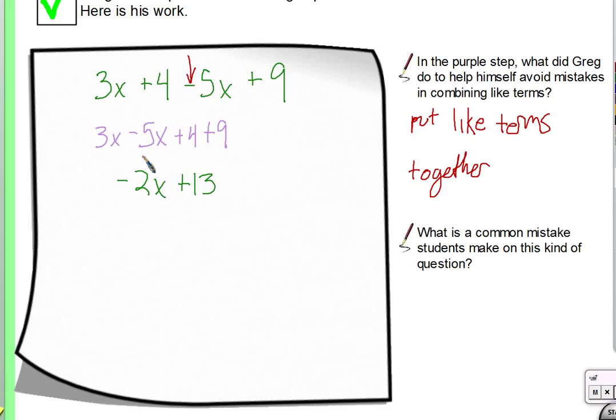Okay. So we would have a 3x minus a 5x. Do I have to rewrite it with 3x minus 5x right next to each other? Of course I don't. Right. I know that 3x minus 5x is 2x, or sorry, negative 2x. Okay. And I don't have to put them next to each other to see that. If I don't make this mistake, like getting 3x minus 5x or seeing 3x and 5x and getting 8x, that's a mistake that happens.